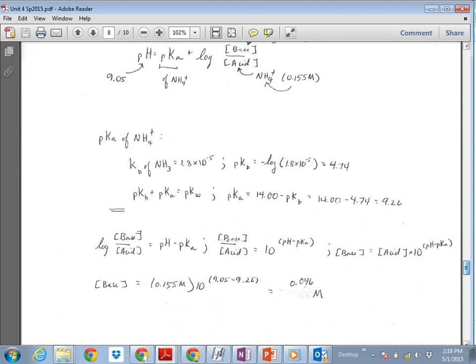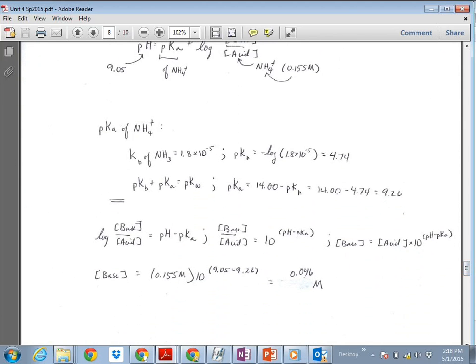So then, turning our attention to the Henderson-Hasselbalch equation, we said that this is kind of a nice form. The molarity or moles of base over the molarity or moles of acid is equal to 10 raised to the pH minus pKa. So we know these two things. We're trying to solve for the molar concentration of the base. So the molar concentration of the acid was given, 0.155 molar. So we multiply that times 10 raised to the pH minus pKa, and you get 0.096 moles per liter. Not my best penmanship, but it will do.